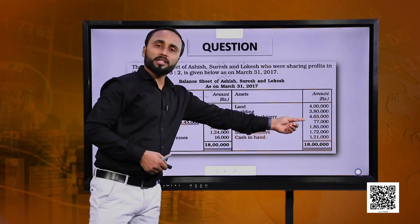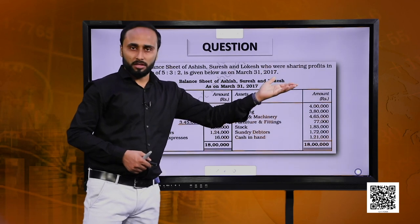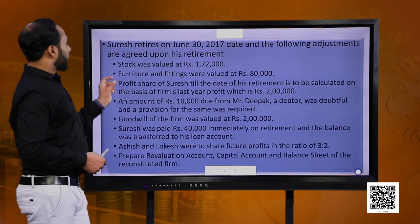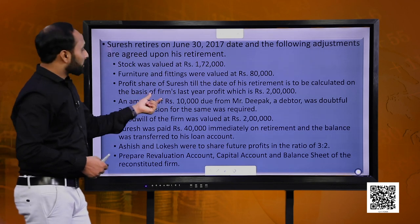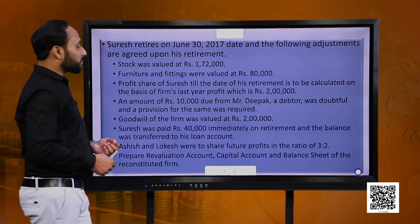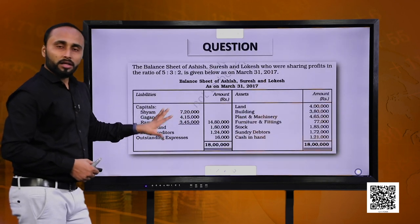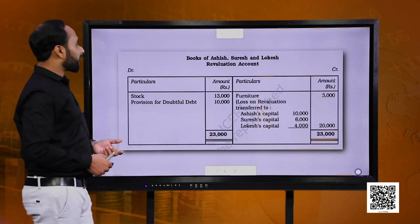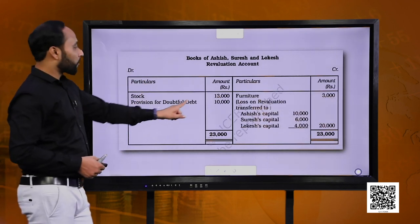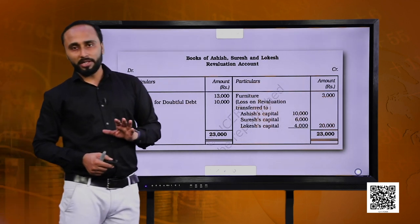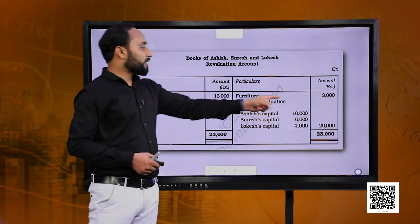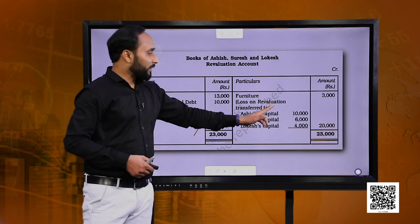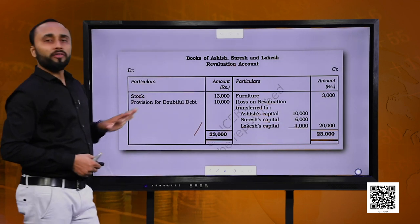Furniture and fittings were to be valued at 80,000, which were earlier 77,000 — their value has increased. So we record it on the credit side of the revaluation account. For the provision for doubtful debts of 10,000, a provision is a liability; when you create a liability you show it on the debit side of the revaluation account. After balancing, there is a loss of 20,000 which all partners will bear in their old ratio of 5:3:2.